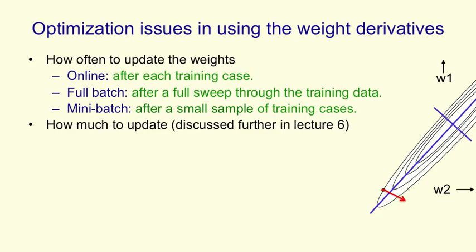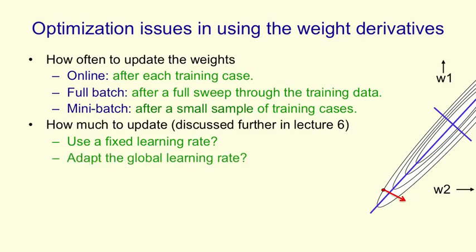Then there's the issue of how much we update the weights, how big a change we make. So we could just, by hand, try and pick some fixed learning rate, and then learn the weights by changing each weight by the derivative that we've computed times that learning rate. It seems more sensible to actually adapt the learning rate. We could get the computer to adapt it by, if we're oscillating around, if the error keeps going up and down, then we'll reduce the learning rate. But if we're making steady progress, we might increase the learning rate.